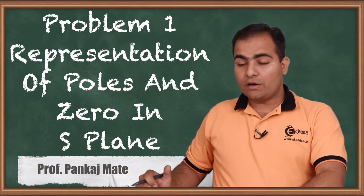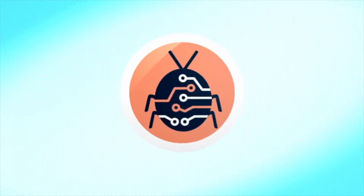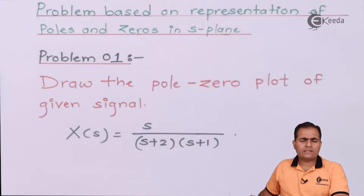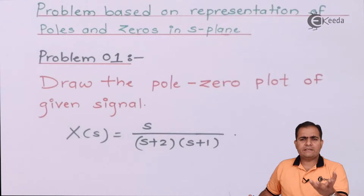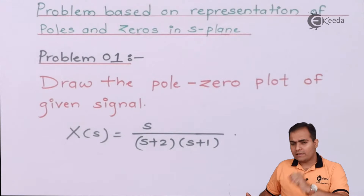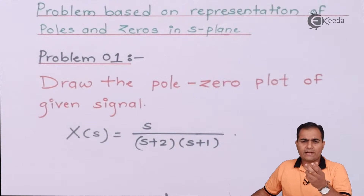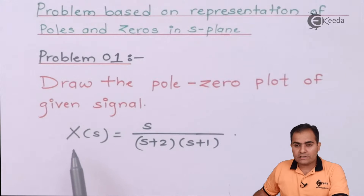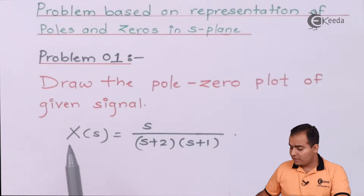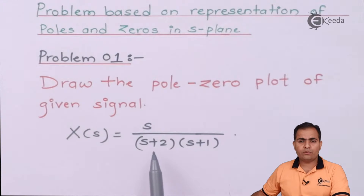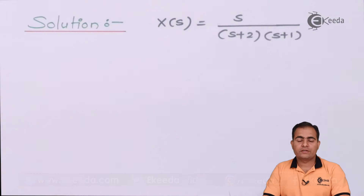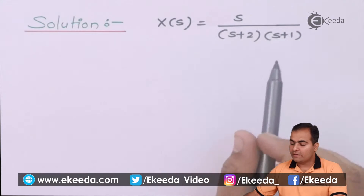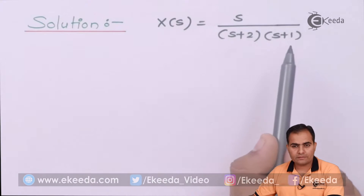Now we'll study how to draw a pole-zero plot. The question is always straightforward: draw a pole-zero plot of a given function. Right now I have taken a simple question so that the concept is easy to understand. The function X(S) is given in the S-domain. In the numerator we have simply S, and in the denominator we have two roots: (S+2) and (S+1). Using this, we are going to find the poles and zeros of X(S), which equals S divided by (S+2)(S+1).